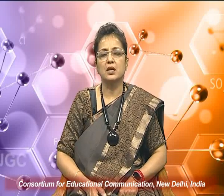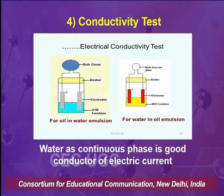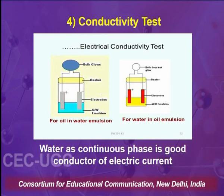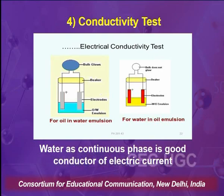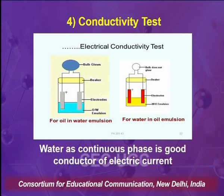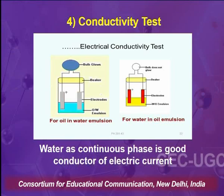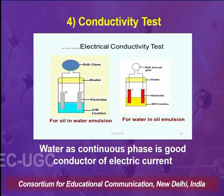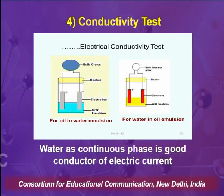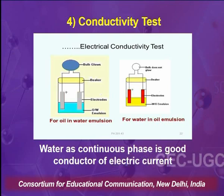The fourth test is the conductivity test. As the diagram indicates, we need to create an electrical circuit. The principle is simple: water is a good conductor of electricity. If we have an emulsion where water is the external phase and set up a circuit — if the bulb glows when current is passed — it indicates the system is oil-in-water type, because water being more in quantity and a good conductor of electricity helps the bulb glow. If the bulb does not glow, the system is water-in-oil type because oil, being the continuous phase, is a non-conductor.